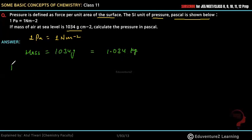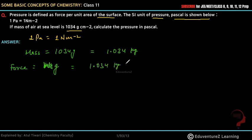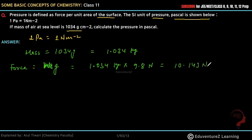अब force का formula क्या होता है — force equals होता है m into g. यहां पर mass हो गया हमारा 1.034 kg, और g का value होता है 9.8 Newton. तो यहां से value निकालेंगे तो यहां आएगा 10.143 Newton.